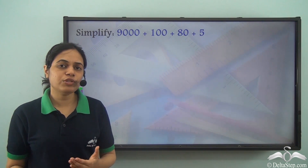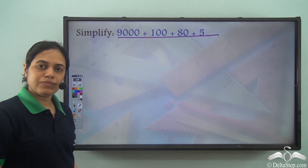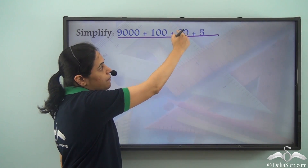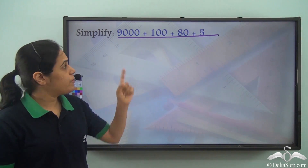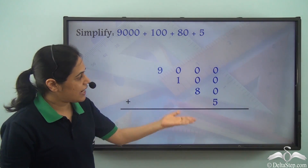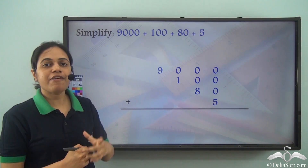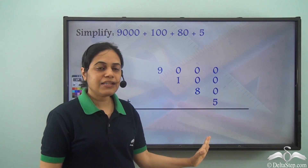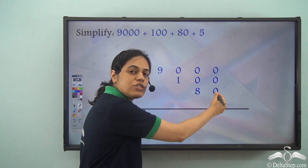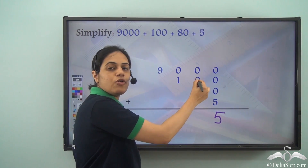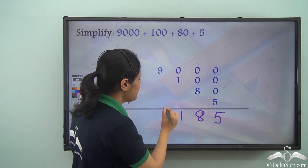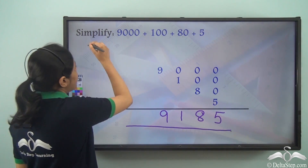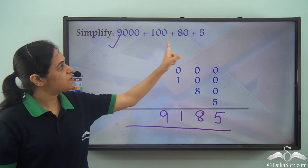Now, what if we want to do the other way round? This is the expanded form of a number and I want to find the number from it. It is nine thousand plus one hundred plus eighty plus five. Because addition is given, I can simply add these numbers to get the original number. Zero plus zero is zero, zero plus five is five; zero plus eight is eight; zero plus one is one; and I have nine here. So the original number is nine one eight five — that is the number whose expanded form is this.